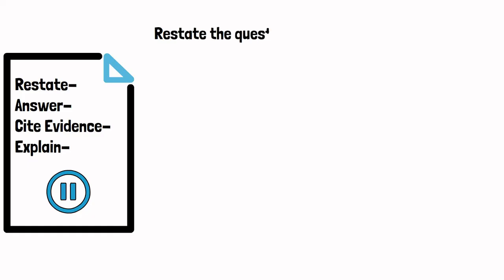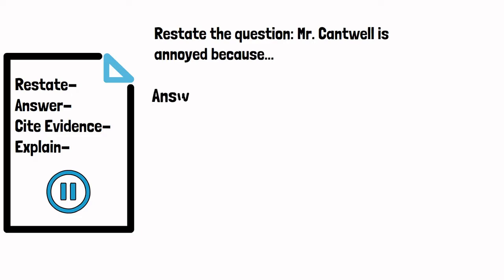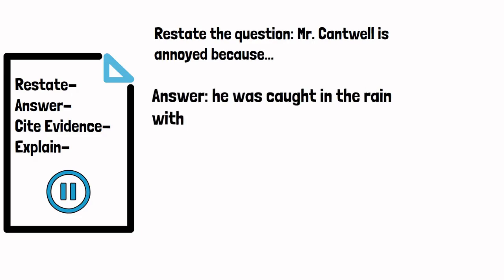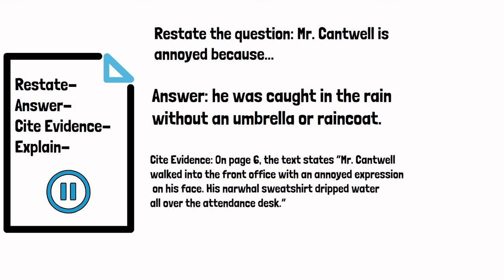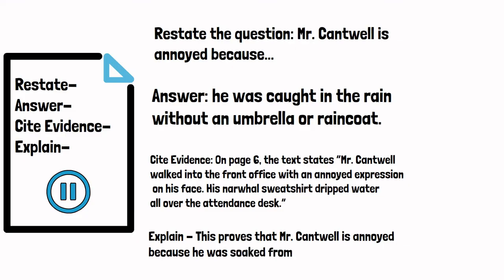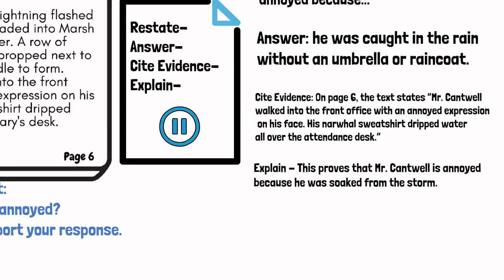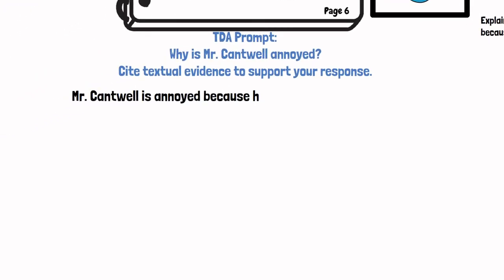And here come my answers. Did you write something like: Mr. Cantwell is annoyed because — for your restate — he was caught in the rain without an umbrella or raincoat, for your answer? And what evidence did you cite? Did you say: on page 6, the text states, quote, Mr. Cantwell walked into the front office with an annoyed expression on his face. His narwhal sweatshirt dripped water all over the attendance desk. And for your explanation, did you put something like: this proves that Mr. Cantwell is annoyed because he was soaked from the storm? Hopefully your pre-writing looked similar to mine.